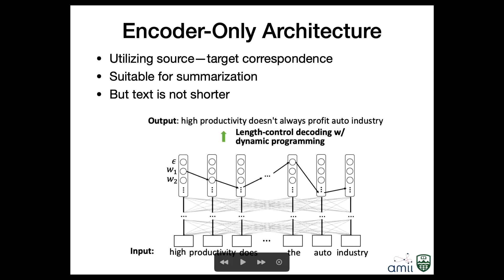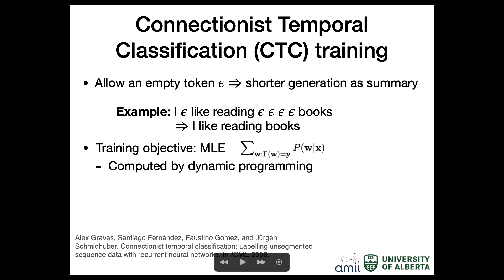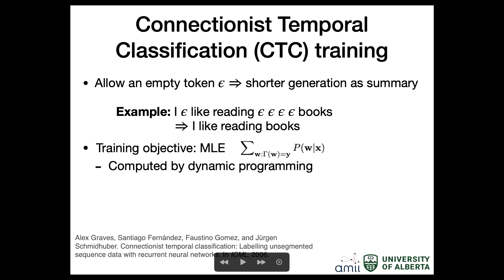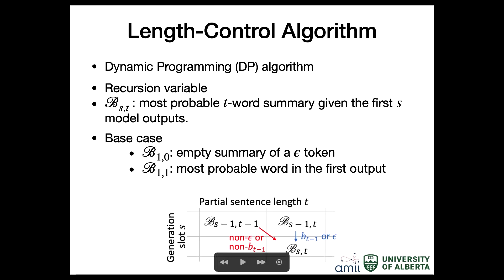Another benefit is that summarization is very extractive — you can extract key words from the input and get a fairly good summary. The transformer's skip connections help preserve information position-wise. To train the model with epsilon tokens in different places, we use CTC — Connectionist Temporal Classification — which marginalizes over all possible epsilon placements. No matter where you insert epsilons, you sum the probabilities and maximize the marginal probability. This is done with a dynamic programming algorithm from the CTC speech alignment literature.